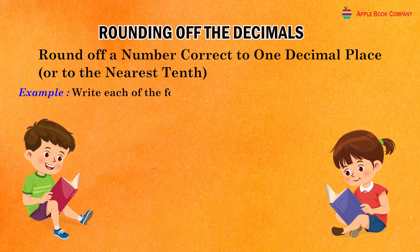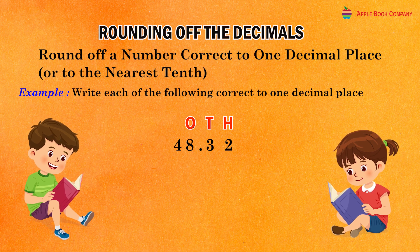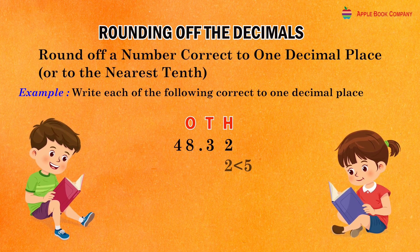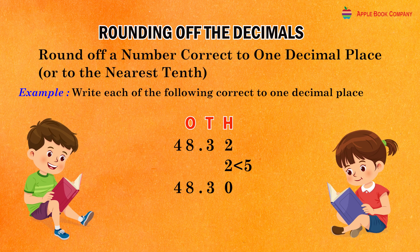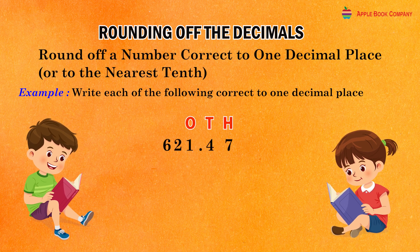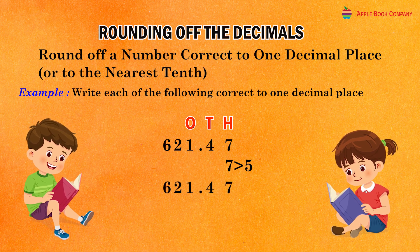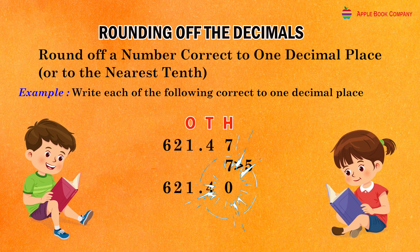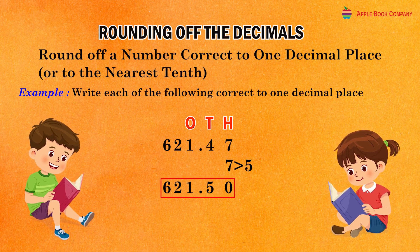Example: Write each of the following correct to one decimal place. The given decimal is 48.32. Here, the digit at the second decimal place is 2 which is less than 5. So, we replace every digit after the first decimal place by zero and keep all the digits before the decimal point as they are. Rounded number is equal to 48.30. The given decimal is 621.47. The digit at the second decimal place is 7, so increase the digit at the first decimal place by one. Rounded number is equal to 621.50.